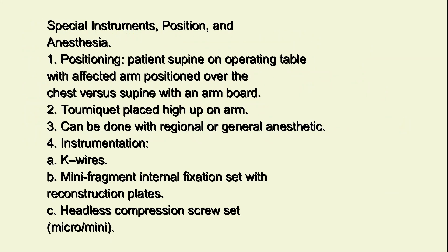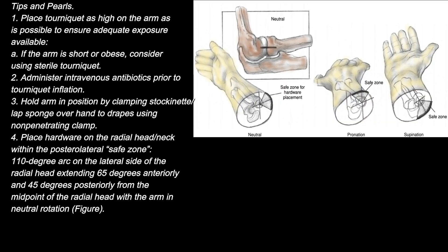Special instruments, position, and anesthesia: 1. Positioning — patient supine on the operating table with the affected arm positioned over the chest, or supine with an arm board. 2. Tourniquet placed high up on the arm. 3. Can be done with regional or general anesthetic. 4. Instrumentation includes K-wires, mini-fragment internal fixation set with reconstruction plates, and headless compression screw set with micro/mini tips.